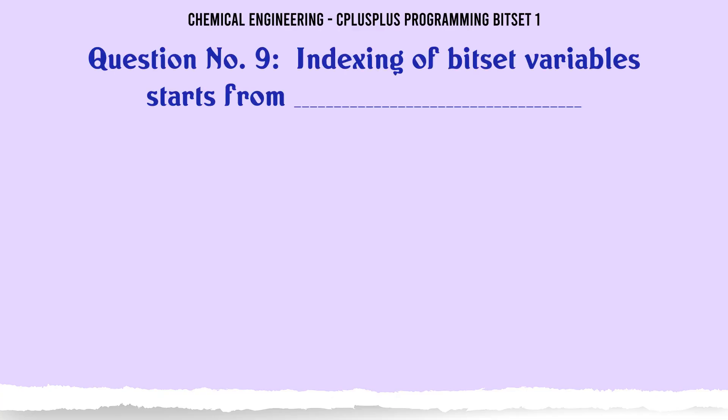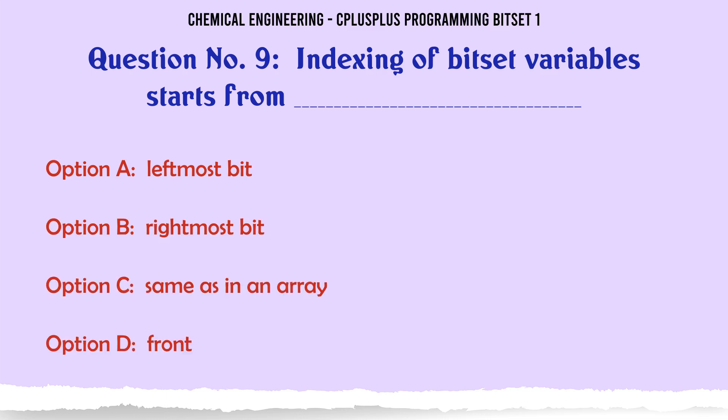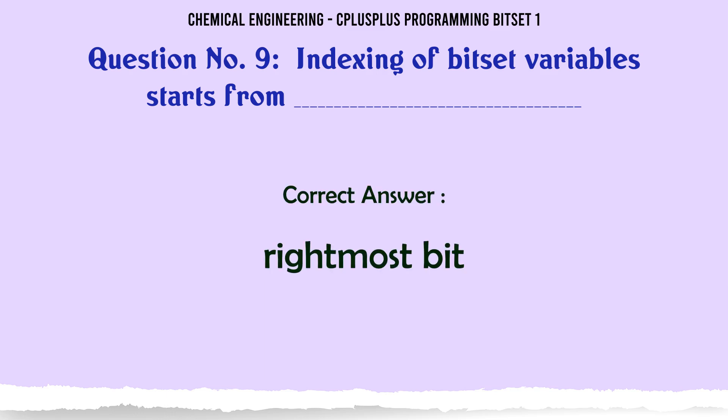Indexing of bitset variables starts from? A. Leftmost bit. B. Rightmost bit. C. Same as in an array. D. Front. The correct answer is rightmost bit.